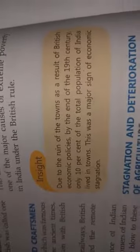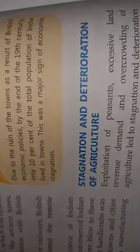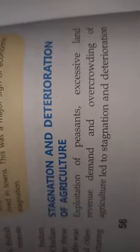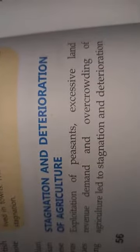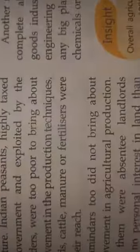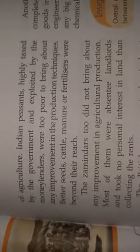In the 19th century, only 10% of the Indian population lived in towns. This showed economic stagnation and deterioration of agriculture, exploitation of peasants, excessive land revenue demands, and overcrowding of agriculture, all of which led to further stagnation. Indian peasants were highly taxed by the government and exploited.